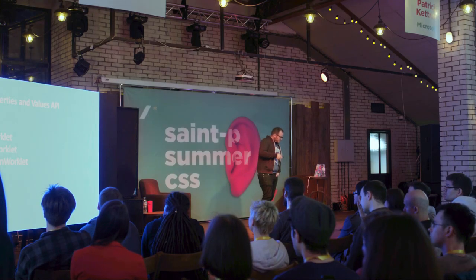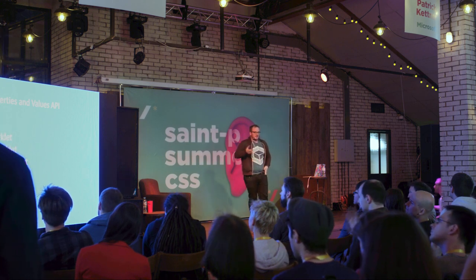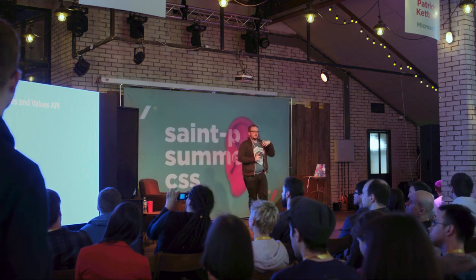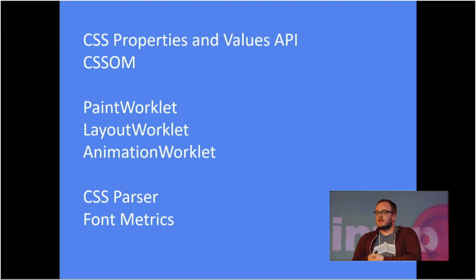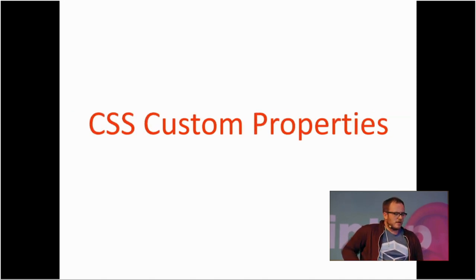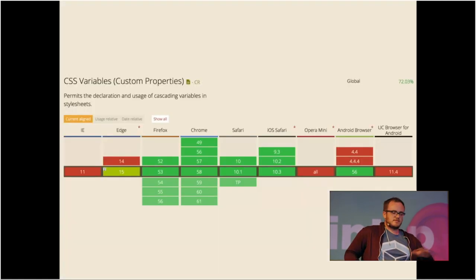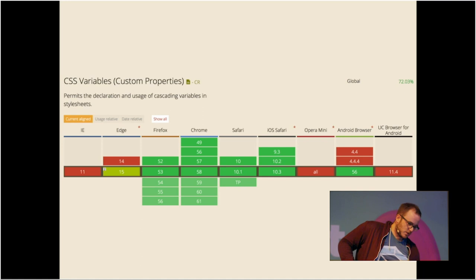Now that we understand the rendering pipeline, we're going to go over a few different sections of Houdini APIs. Houdini is a collection of APIs — it's not just one modular thing. It's a whole bunch of different new APIs in the browser that allow you to do various things. The very first one is the Property and Value API.